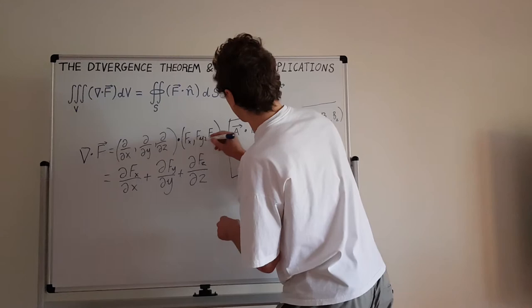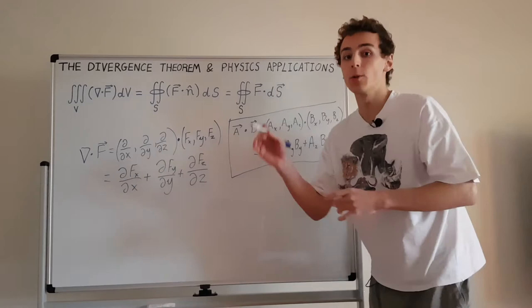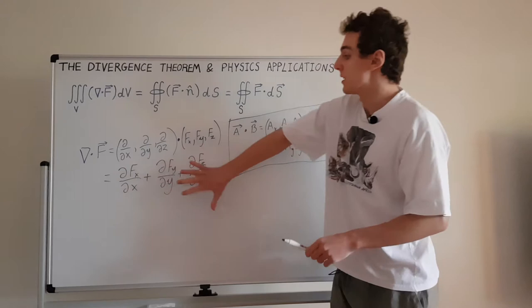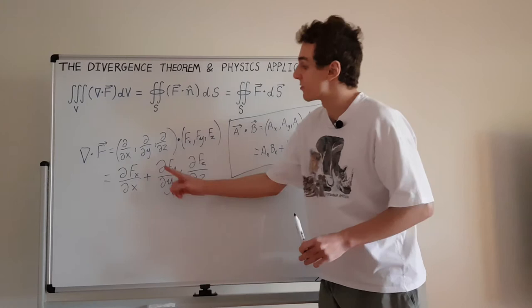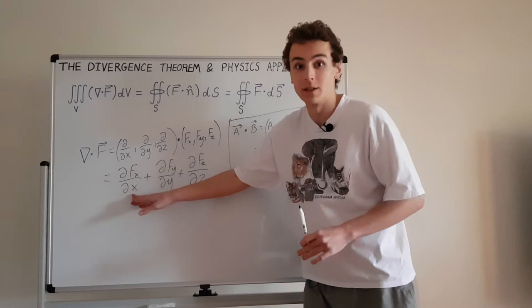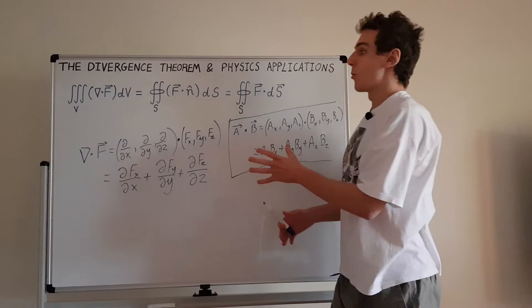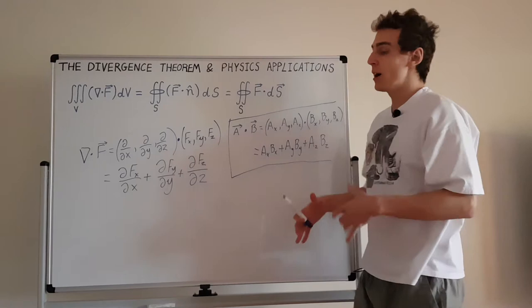This divergence can be computed for every single point in three-dimensional space. Take the three components of F, partially differentiate each with respect to its respective coordinate — x with x, y with y, z with z — take the sum, and you get the divergence. Once you have the divergence, put it inside the triple integral over the volume V, and that's equivalent to the surface integral.